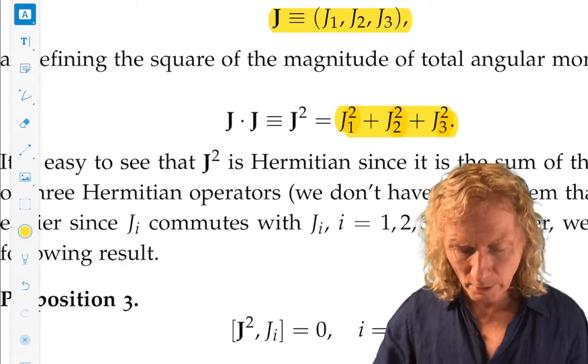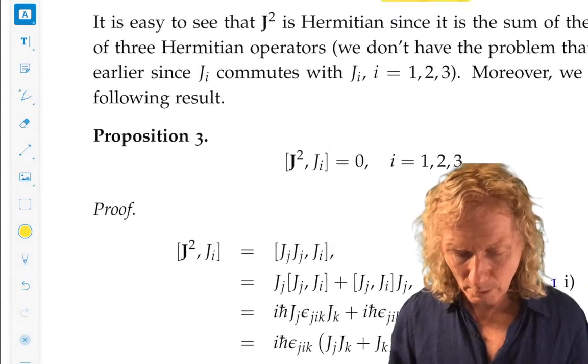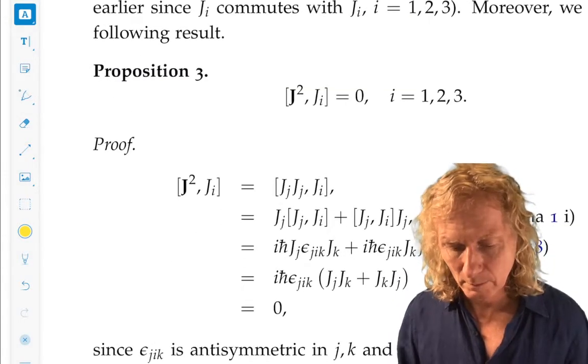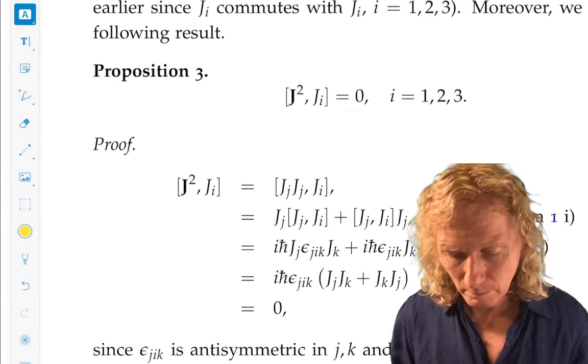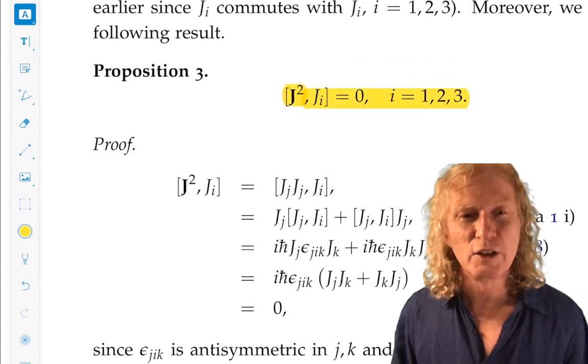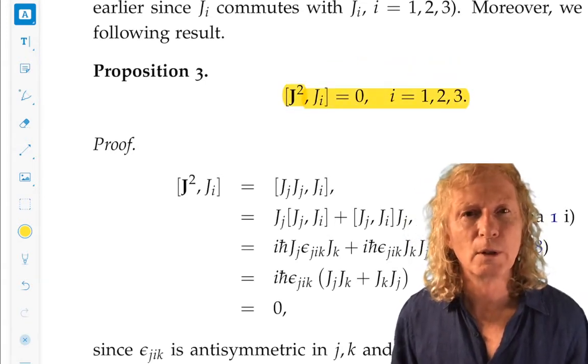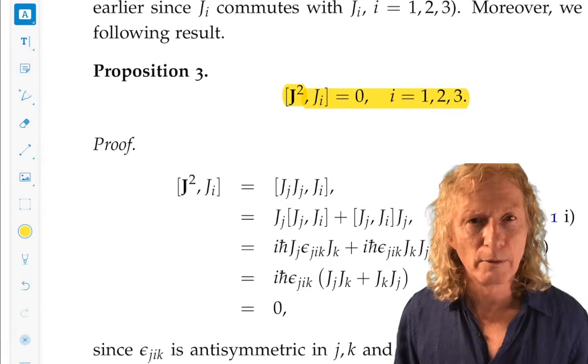So what, where does that get us? Well, we have this proposition. This is a very important proposition. It says that J² commutes with each of the components of J.